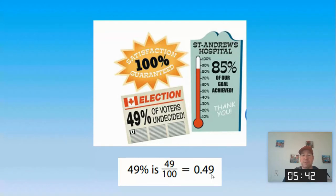What does that actually mean? Well, we know that 49% is actually 49 out of a hundred. So we can write that as a fraction. And once we write it as a fraction, we can then turn that fraction very easily into a decimal right there.